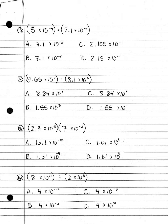Number 13. 5 times 10 to the negative fourth power plus 2.1 times 10 to the negative first power: A. 7.1 times 10 to the negative fifth power; B. 7.1 times 10 to the negative fourth power; C. 2.105 times 10 to the negative first power; or D. 2.15 times 10 to the negative first power.